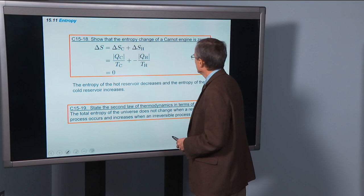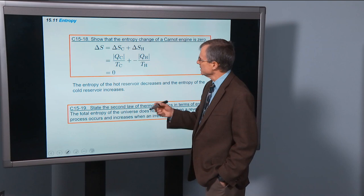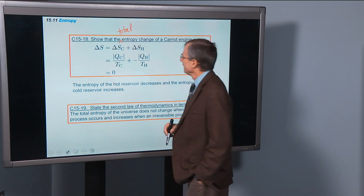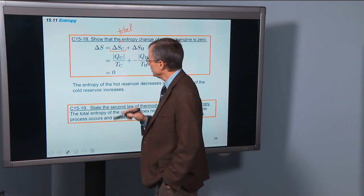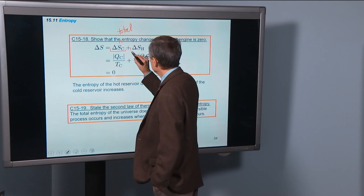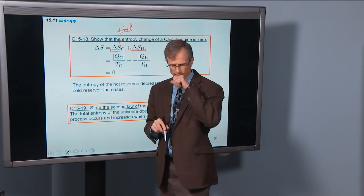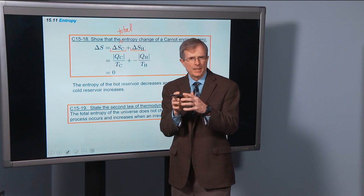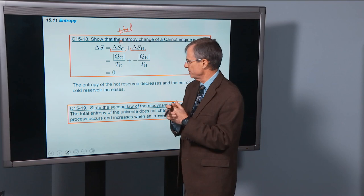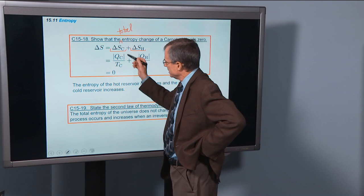So let's show that the entropy change of a Carnot engine is zero. So this is the total entropy change. I'm adding together the entropy change of the cold reservoir and the entropy change of the hot reservoir. The engine itself, the heat engine, ends up in the same state as it had before, so it doesn't have any entropy change for a Carnot engine. Entropy is defined as the heat added divided by the temperature change.